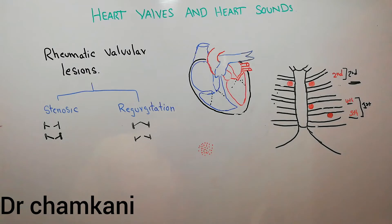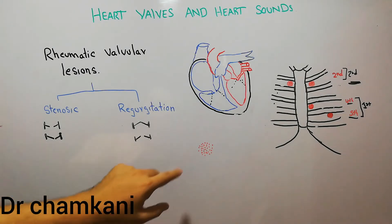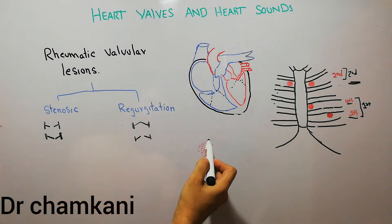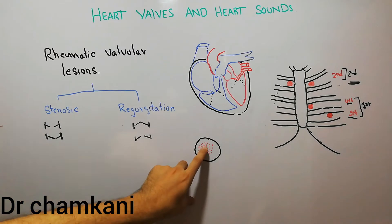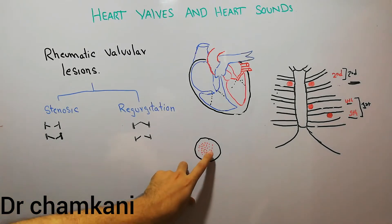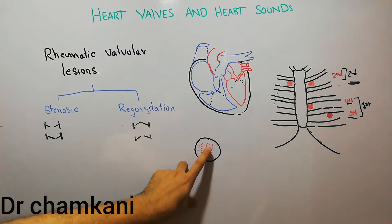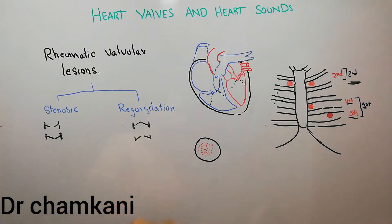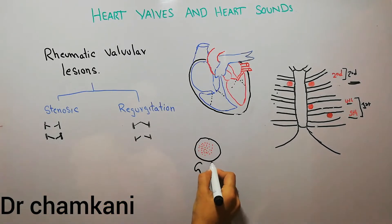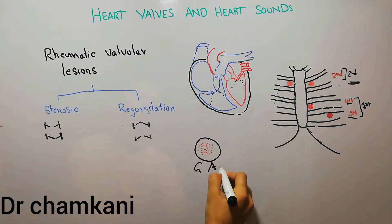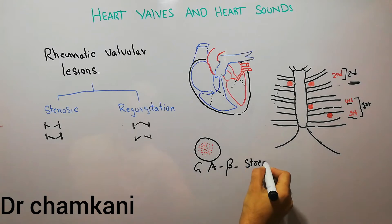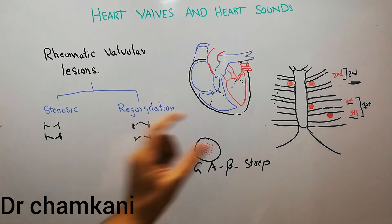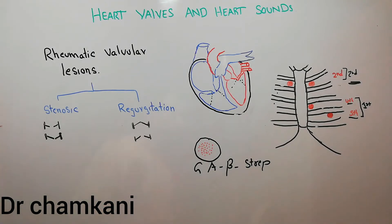Rheumatic valvular lesion occurs when a person is infected with bacteria known as group A beta-hemolytic streptococci. These are the bacteria which are responsible for rheumatic fever.